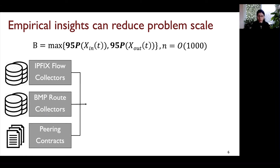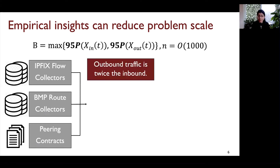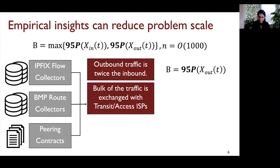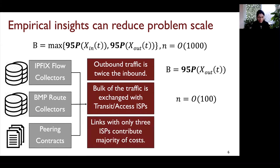Using these three sources of data from the production network, we find that outbound traffic from the cloud is twice the inbound traffic in volume — allowing us to simplify the objective function to just consider outbound allocations. The second finding is that the bulk of traffic exchanged at the edge is with transit or access ISPs, so we reduce the scale by only optimizing allocations to those ISPs. Finally, of these ISPs, only three contribute the majority of inter-domain bandwidth costs, meaning we need to optimize allocations to just a few tens of peer links to save most of the bandwidth costs.